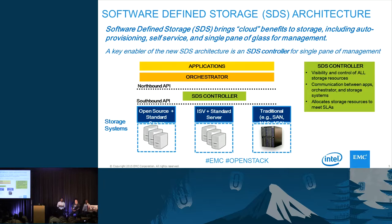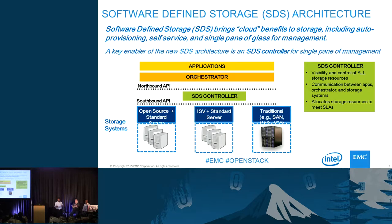Applications make storage requests based on requirements — service level agreements and service level objectives. Things like how much capacity you need, what kind of performance you're looking for, what is the latency, how to manage these volumes over their lifetime, maybe periodic backups. The controller, having visibility of storage resources, will optimally allocate those requests. Once that is done, it completely gets out of the data path between the application and the storage resource. The controller does not involve in the data path — only control plane operations.